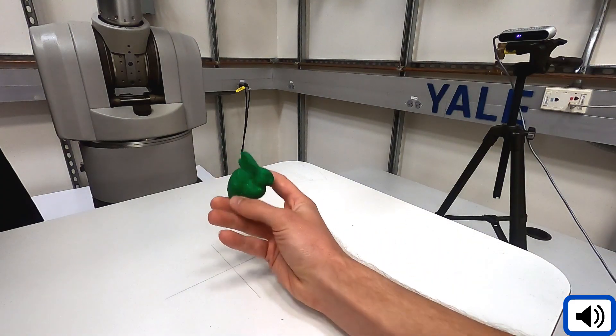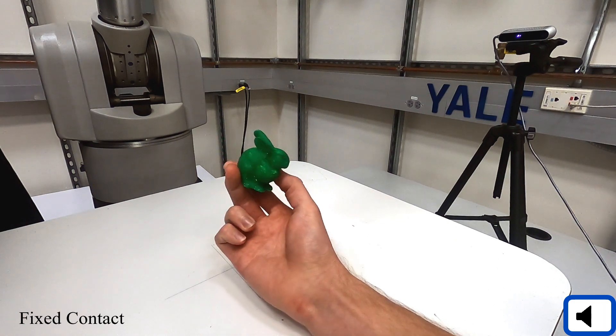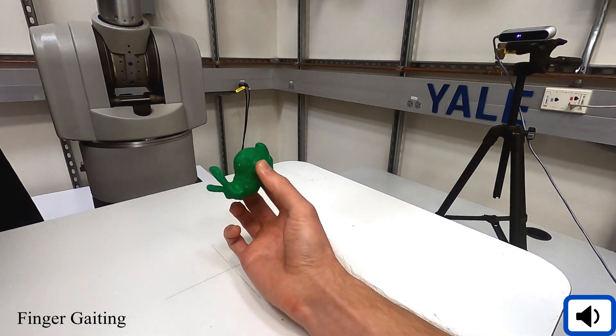In this work, we focus on extending the capabilities of robots with in-hand manipulation through finger gating, as this is a task we as humans perform often to enlarge the hand's available workspace.